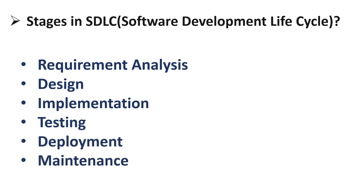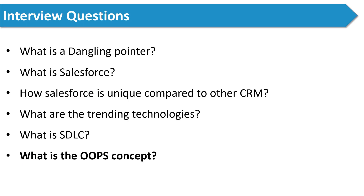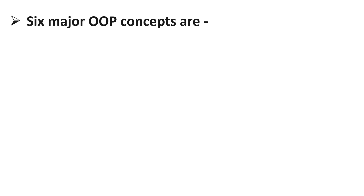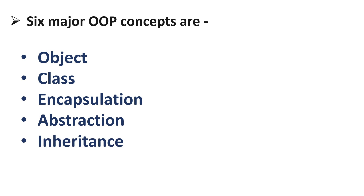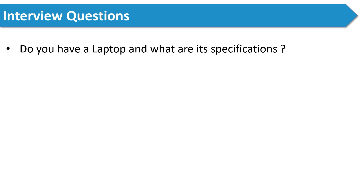The next question was: what is the OOP concept? Start by giving a small definition of object-oriented programming, then specify the six major OOP concepts: object, class, encapsulation, abstraction, inheritance, and polymorphism. After that, explain each concept with a real-life example. Real-life examples are very important because they show the interviewer you truly understand the concept, not just memorized the definitions. This will add more credit to your selection.